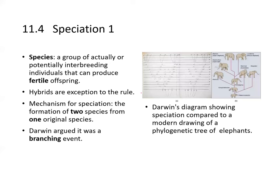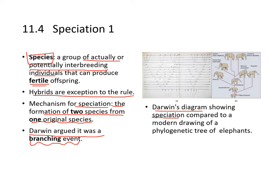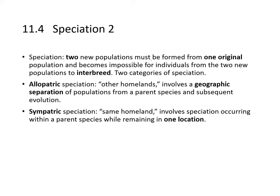How does speciation occur? A species is a group of actually or potentially interbreeding individuals that can produce fertile offspring — hybrids are an extension of this rule. The mechanism for speciation deals with the formation of two species from one original species. Darwin argued this was a branching event, and his diagram is quite similar to a modern phylogenetic tree of elephants.